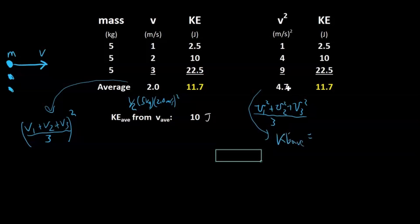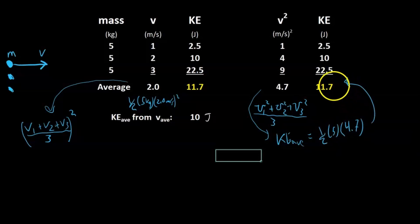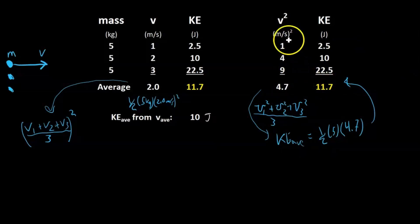The average kinetic energy is one-half m times the average v squared — one-half times 5 kg times 4.7. Plugging that in, we truly get the correct average kinetic energy. So using the mean of v squared, we can accurately calculate the average kinetic energy.